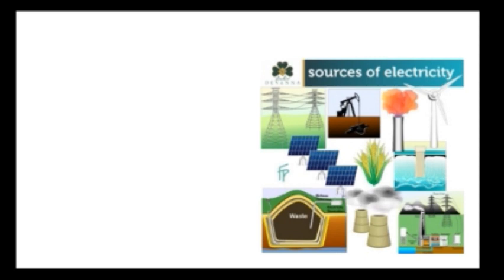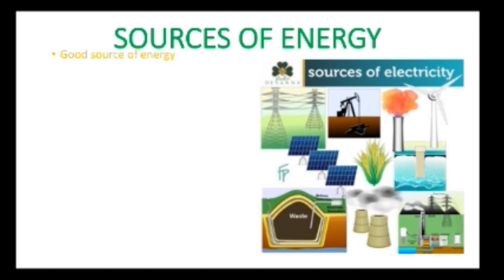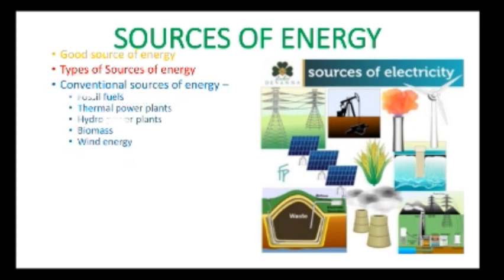Now the next thing is the content — what things we will discuss within this chapter. The first thing we will discuss is good sources of energy: what criteria are required to be a good source of energy. Second is types of sources of energy — what types are present. Within that, the first is conventional sources of energy. Within conventional sources we have fossil fuel, thermal power plant, hydro power plant, biomass, and wind energy — each of which we will explain in detail.